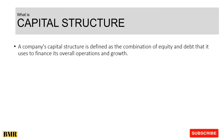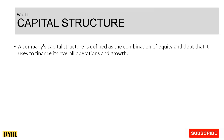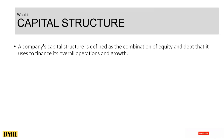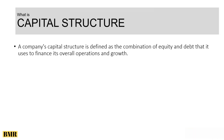Talking about the definition, a company's capital structure is defined as the combination of equity and debt. Equity means investment by the investor or the portion of the shareholders, and debt means loans. It can be a short-term loan or long-term loan that the company uses to finance its overall operations and growth. Both capital types are used for the growth of the organization so as to achieve its organizational objective.